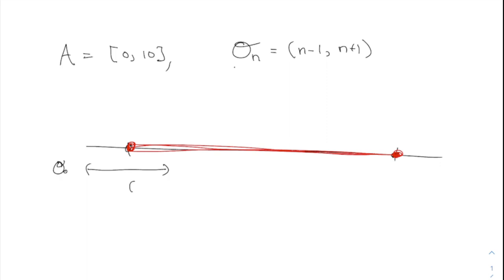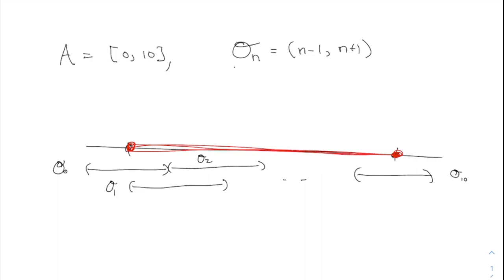O-1 goes from 0 to 2, O-2 goes from 1 to 3, and so on. Eventually you get the last one, which is O-10. Those do cover the original set because the original set is a subset of all those things taken together. You can think of them as little patches that cover up the whole set.